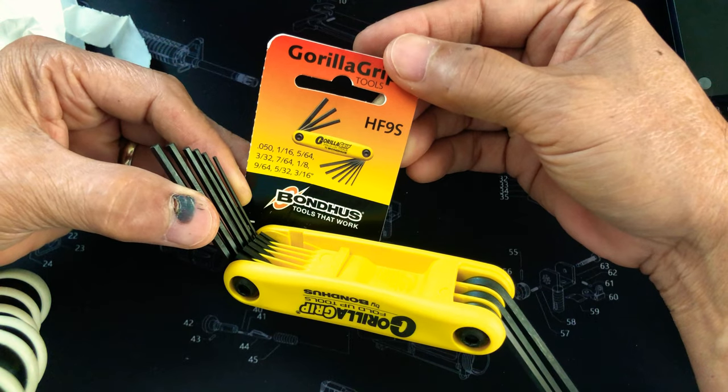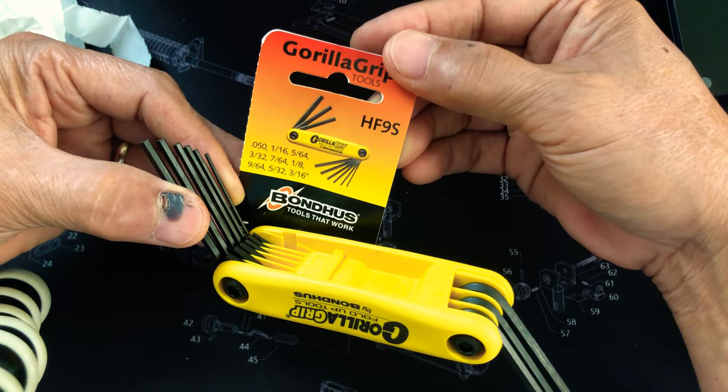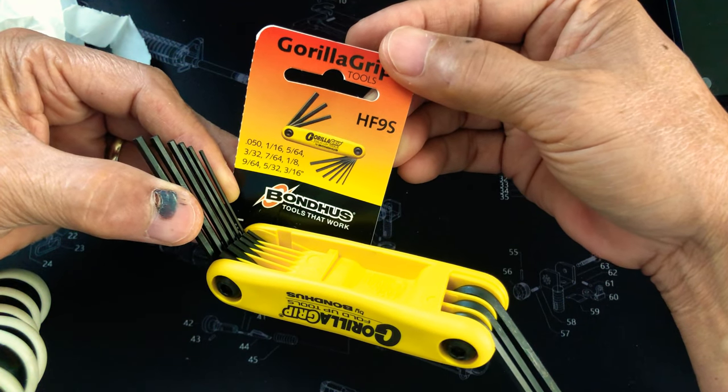It's got the other sizes here: 0.05, one over sixteen, five over sixty-four, three over thirty-two, seven over sixty-four, one eighth, nine over sixty-four, five over thirty-two, and three over sixteen.